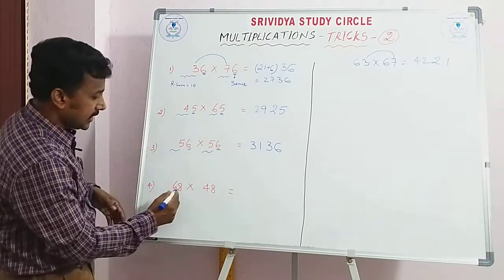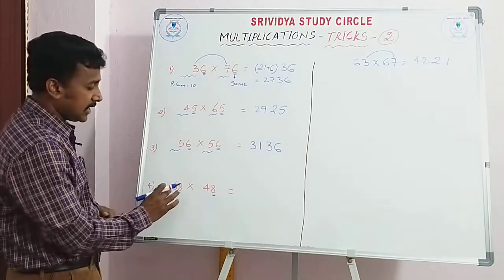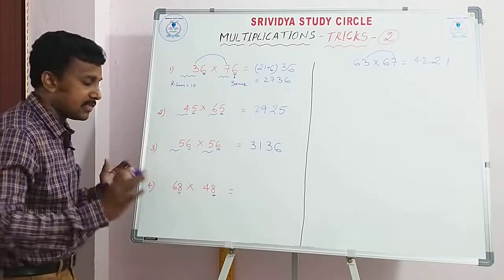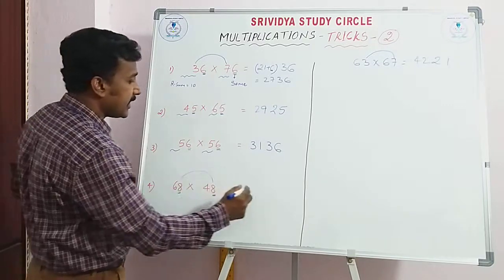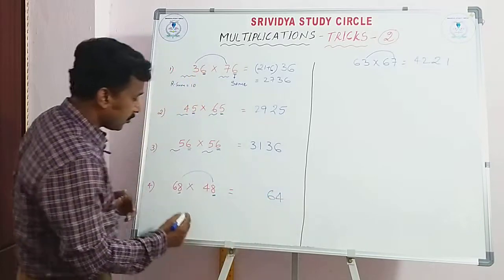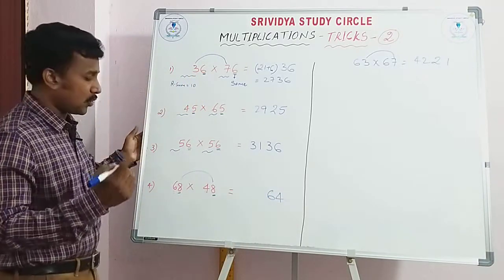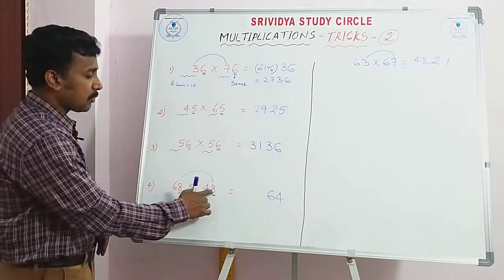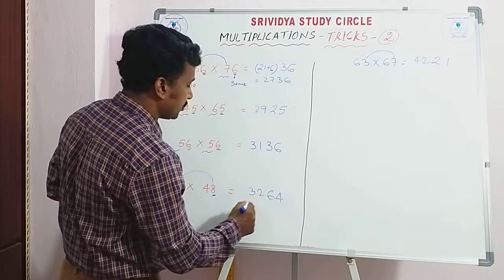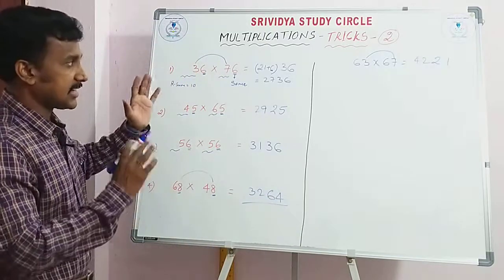Likewise here, units digits same. 10's digits, or remaining digits, sum 10. Apply that condition. 8, 8, 64. 8, 8's are 64. Remaining: 6, 4's are 24. 24 plus 8 — how much? 32. That's it. Directly you can do. This is about Trick 2.